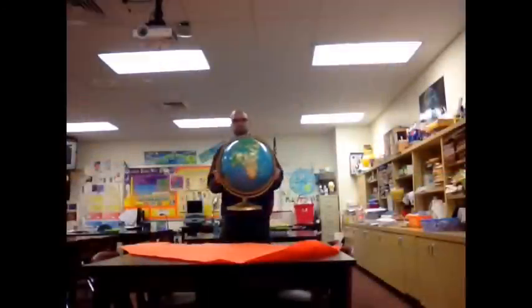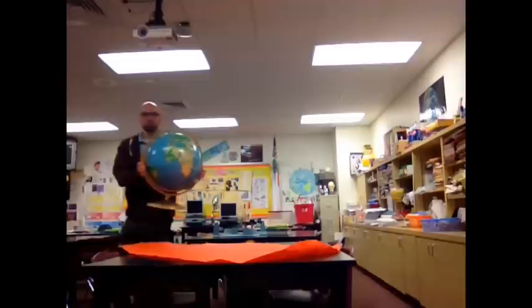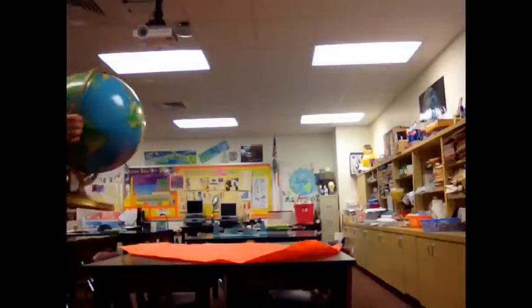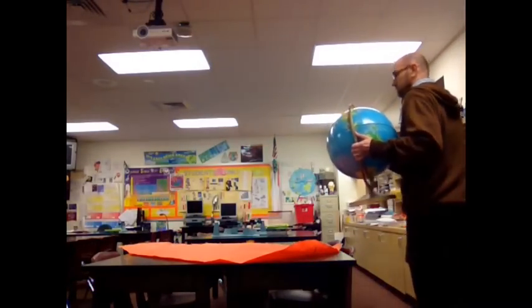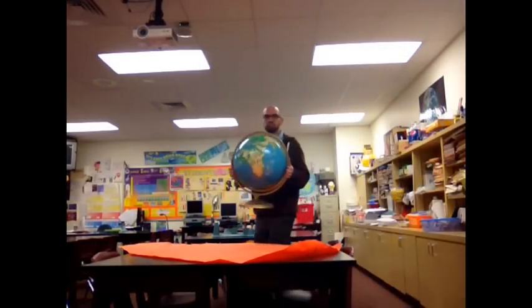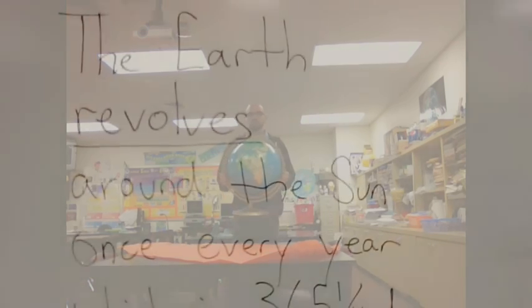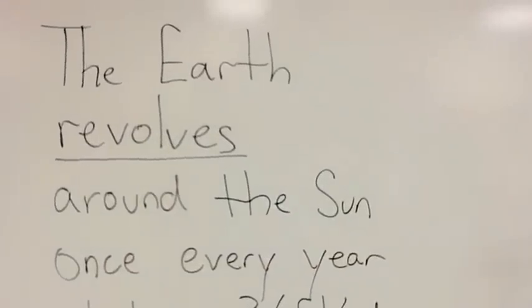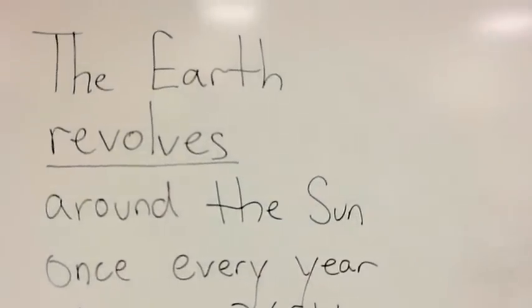The Earth revolves around the Sun once every year, which is 365 and a quarter days.